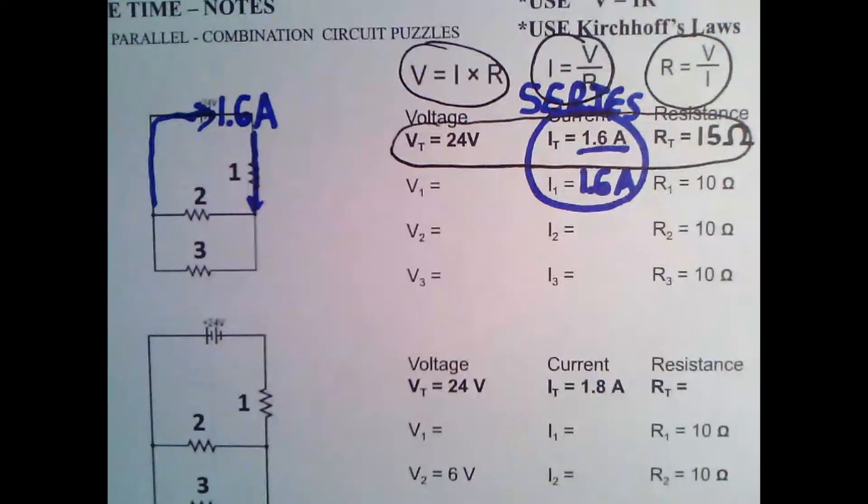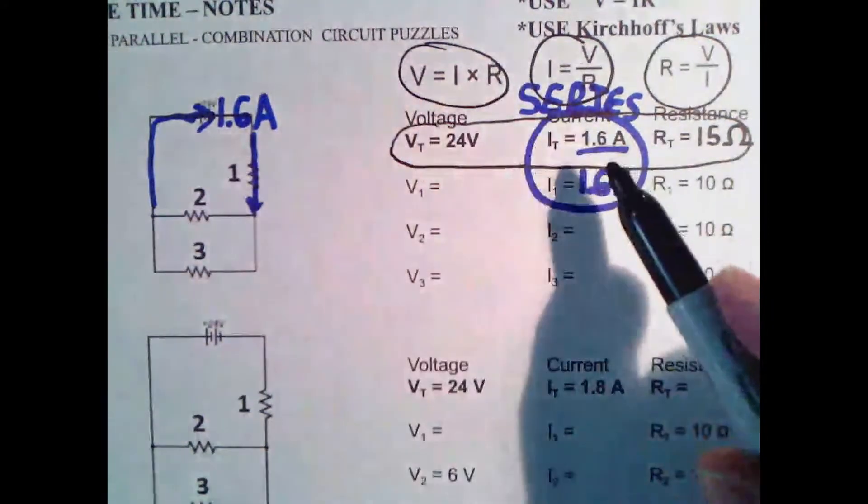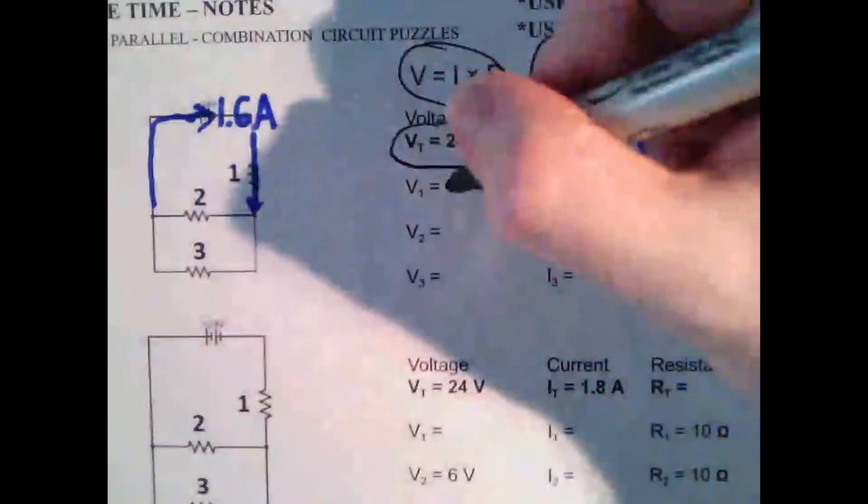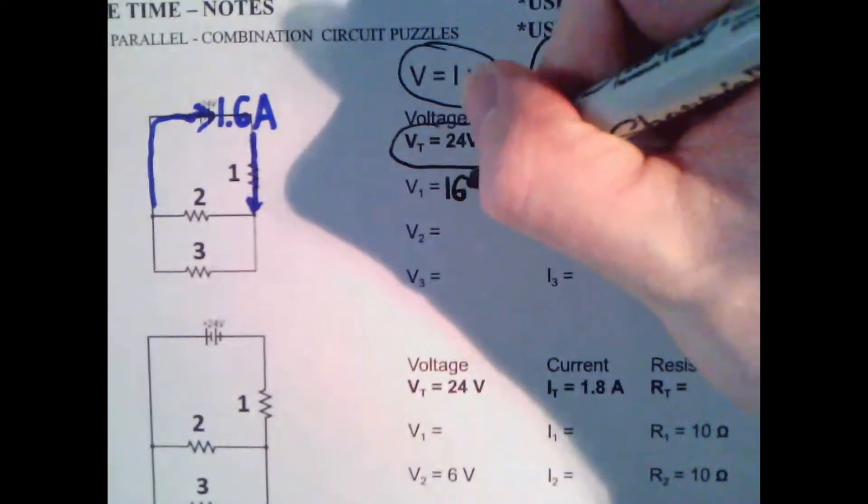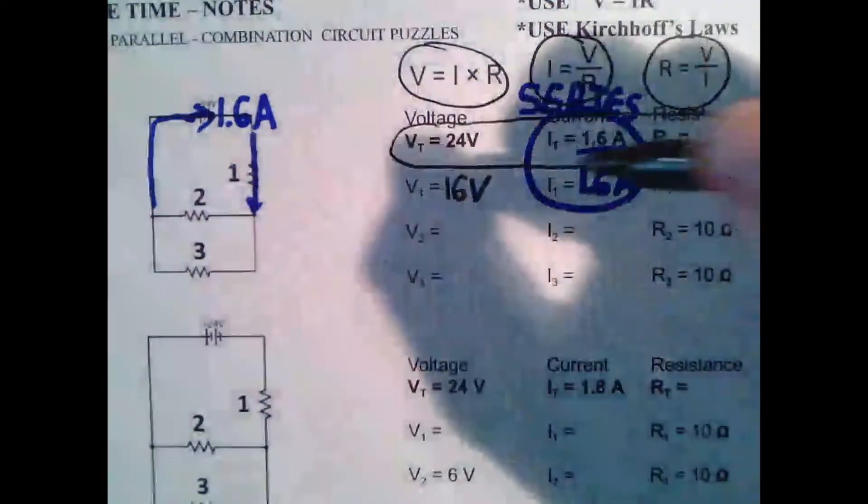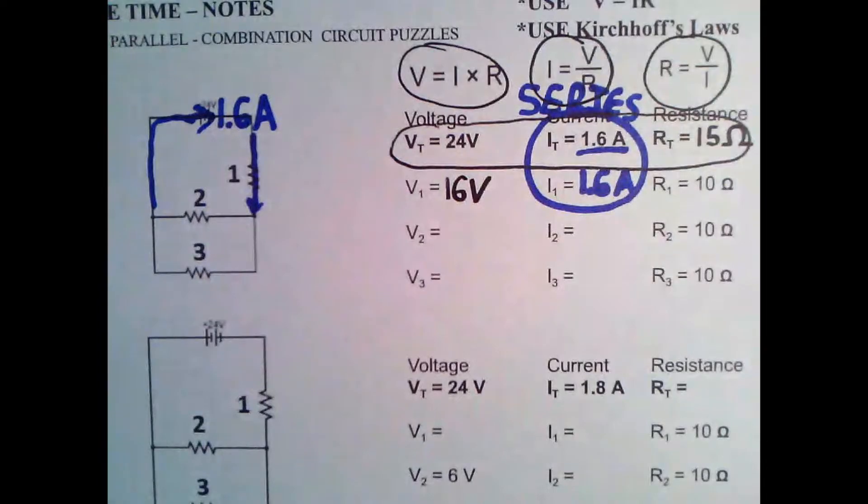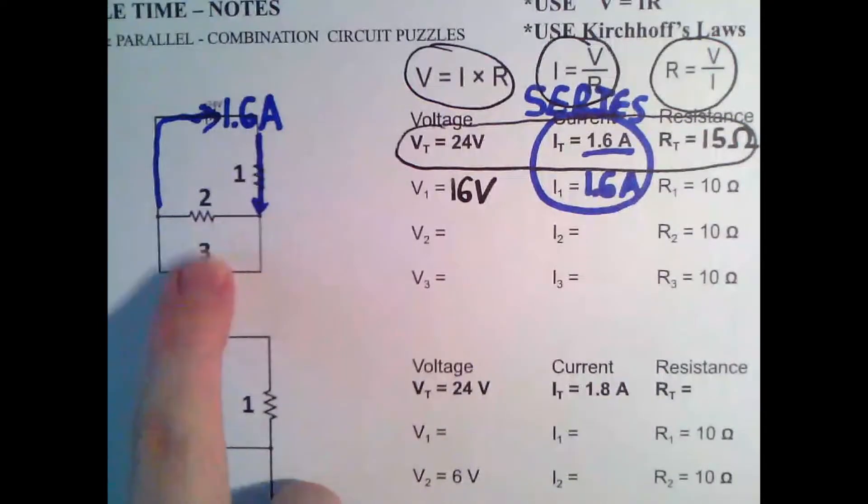The next way this helps us is we realize that these are in series with each other. So we found out this last piece here. So we know two pieces, which means you know the last one. So we know that the voltage equals this multiplied by this. So I know the voltage here is 16 volts. So that's how we figured out this piece.